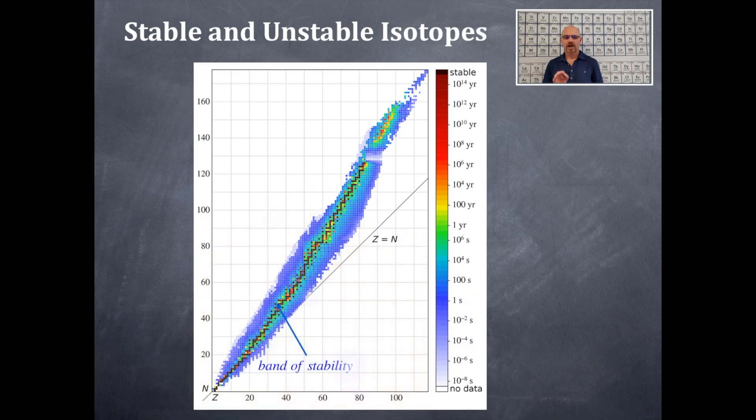So, right here at this central section here is a band of stability. Notice that that band of stability for the lower N, sorry, lower Z, so less than 20, it's when Z equals N when it's less than 20.